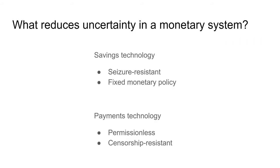On the opposite side, what reduces uncertainty in a monetary system? For savings, having seizure resistance — the more seizure resistant your asset holding is, in the sense of what is the cost of taking your cash, the less uncertainty you have. On the monetary policy side, the least uncertain monetary policy is one that is fixed ahead of time — one that says there will only ever be 21 million. With gold, you have some boundary conditions, but you're still introducing more uncertainty relative to a system like Bitcoin. And fiat tries to maximize uncertainty on this particular point.